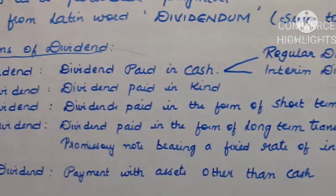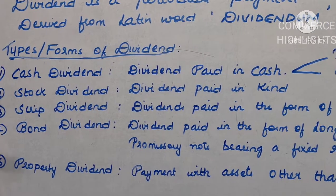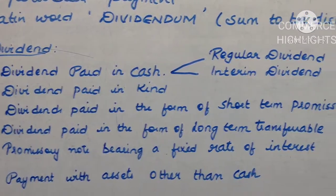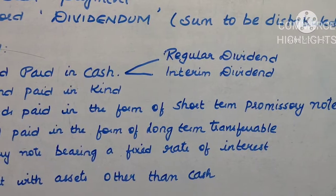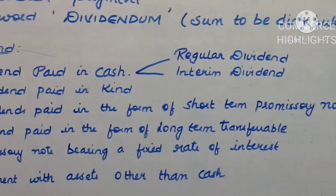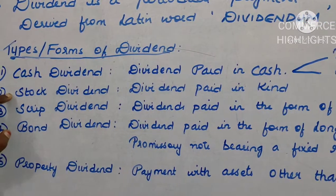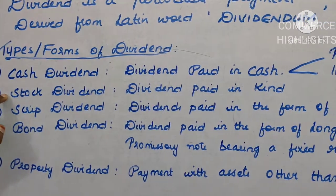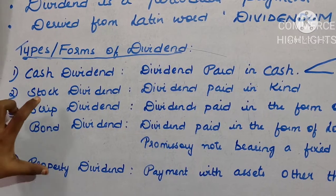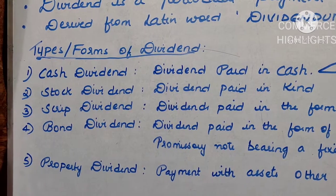So these are the five types or forms of dividend. However, according to India's Companies Act, only two types of dividends are allowed — cash and stock. The company can either distribute cash dividend or stock dividend; the other types of dividend are not practiced in India.